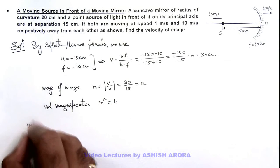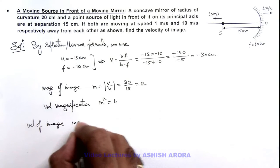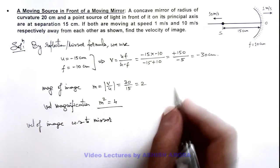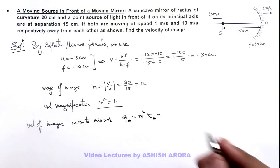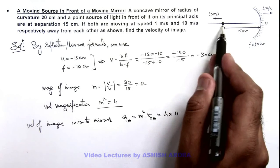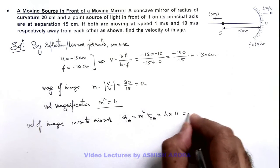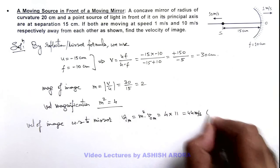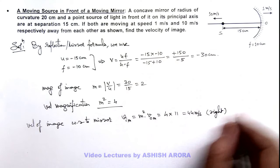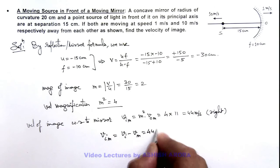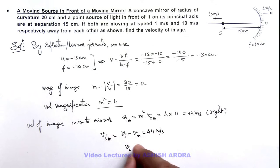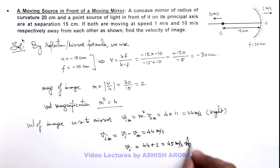So here we can calculate the velocity of the image with respect to the mirror, because we are calculating this magnification for the mirror. The velocity of image with respect to mirror equals m squared multiplied by the velocity of the object with respect to mirror. That is 4 multiplied by 11, because with respect to the mirror the object is moving away at 11 meters per second, giving 44 meters per second. As the object moves away, the image moves toward the right. So the velocity of image with respect to mirror is v_i minus v_m equals 44 meters per second. Therefore, velocity of image equals 44 plus the velocity of mirror, which is 1, giving a final answer of 45 meters per second.